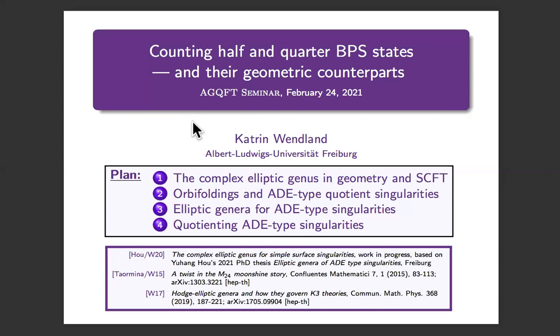Over the past years I've been interested in particular in invariants that are shared by geometry and conformal field theory. One of those invariants I've studied particularly is the so-called elliptic genus, which has an incarnation in both worlds. In both worlds it counts things — on the quantum field theory side it counts half and quarter BPS states, virtually with a sign, so one has to be careful interpreting the results.